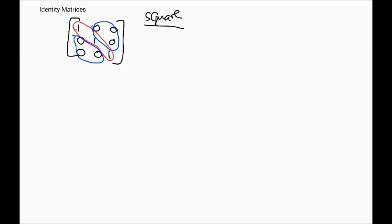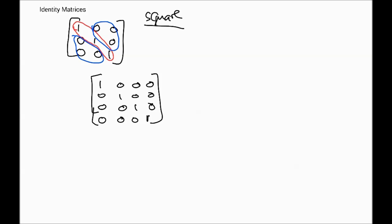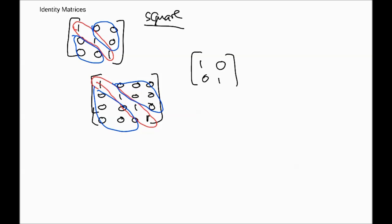For such matrices, we call them identity matrices. Here is an example of a four by four matrix — once again notice the diagonal is all ones, and the upper and lower triangles are all zero entries. It could also be a two by two, which would look like this. These are all called identity matrices.